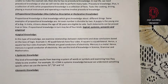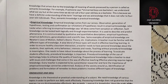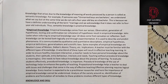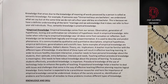Next is semantic knowledge. Knowledge that arises due to the knowledge of the meaning of words possessed by a person is called semantic knowledge. For example, if someone says 'unmarried boys are bachelors,' we understand what is being said, but at the same time we do not call a four-year-old boy a bachelor. This is because we have a definite understanding of the term 'marriage' and we acknowledge that it does not refer to a four-year-old individual. Thus, semantic knowledge is a practical knowledge.